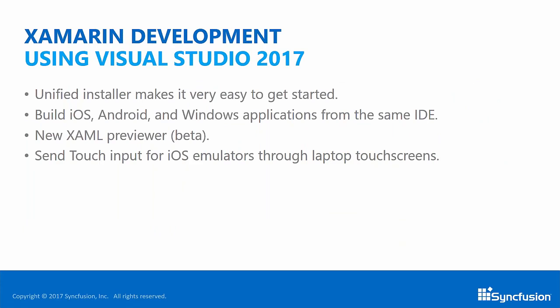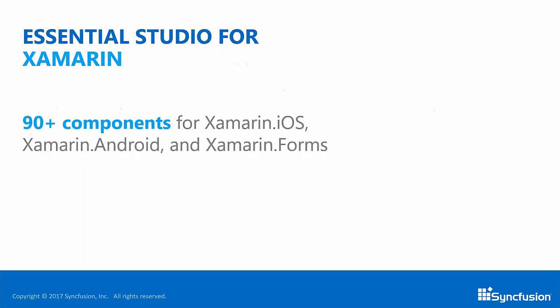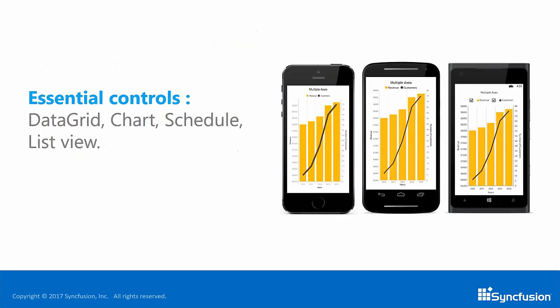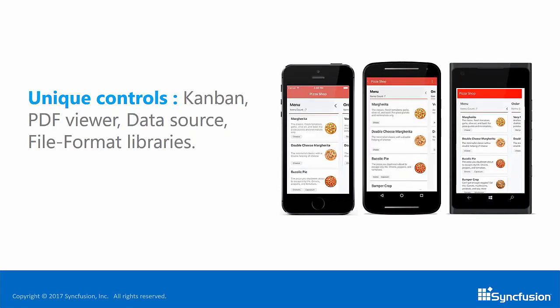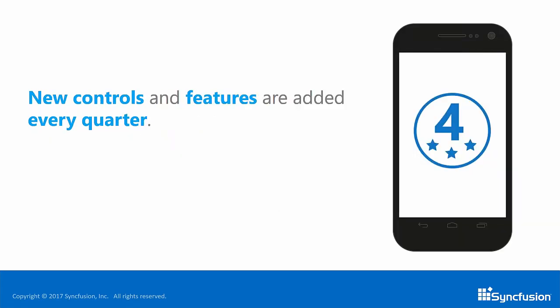Syncfusion products have been compatible with Visual Studio for a long time, and that's continued with Visual Studio 2017, with a unified installer, a new XAML previewer, and touch input for iOS emulators. We have more than 90 components for Xamarin iOS, Xamarin Android, and Xamarin Forms, and we're constantly adding to those. Some of our most popular controls are the data grid, the chart, the schedule, and the list views. We also offer a wide range of other controls including a Kanban and file format libraries. Syncfusion adds new controls and features in quarterly releases, many of these based on requests from our customers, so we're always welcoming suggestions and feature requests.